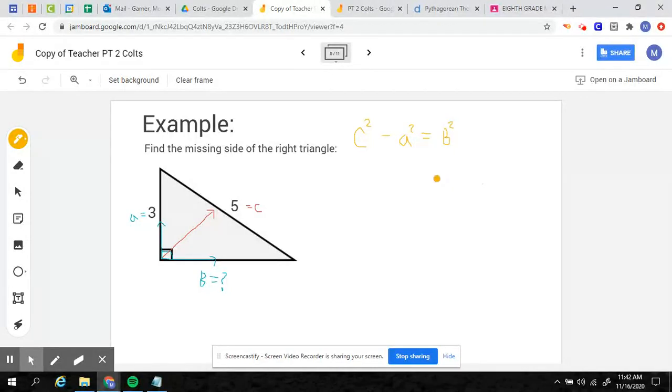So notice the big difference here when you're given the hypotenuse is we're no longer adding. This has become a subtraction problem. So what this looks like is my hypotenuse is five. So I get five squared minus the leg, three squared. And that's going to equal my other leg squared. So B squared. At this point, you just need to simplify. So five squared, which is five times five equals 25, three squared, which is three times three equals nine. So I get 25 minus nine equals B squared. And now I'm going to subtract. So 25 minus nine equals 16. And that's still equal to B squared.